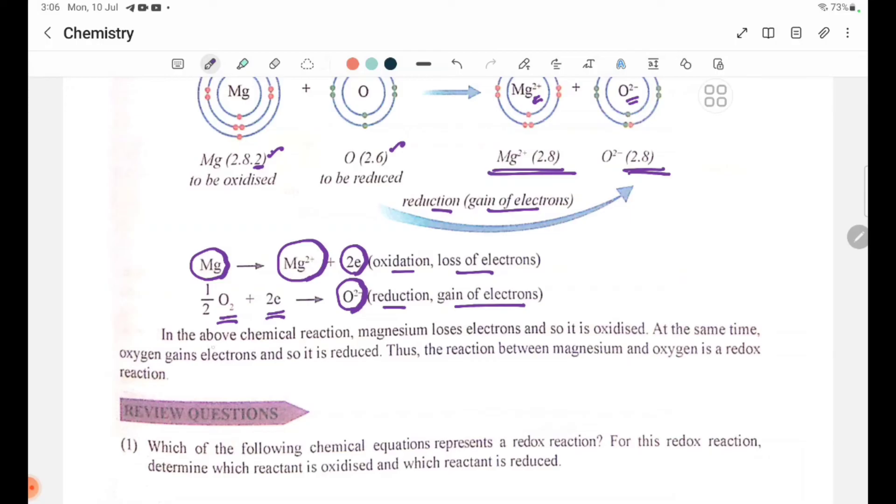In the above chemical reaction, magnesium loses electrons and so it is oxidized. At the same time, oxygen gains electrons and so it is reduced. Thus, the reaction between magnesium and oxygen is a redox reaction.